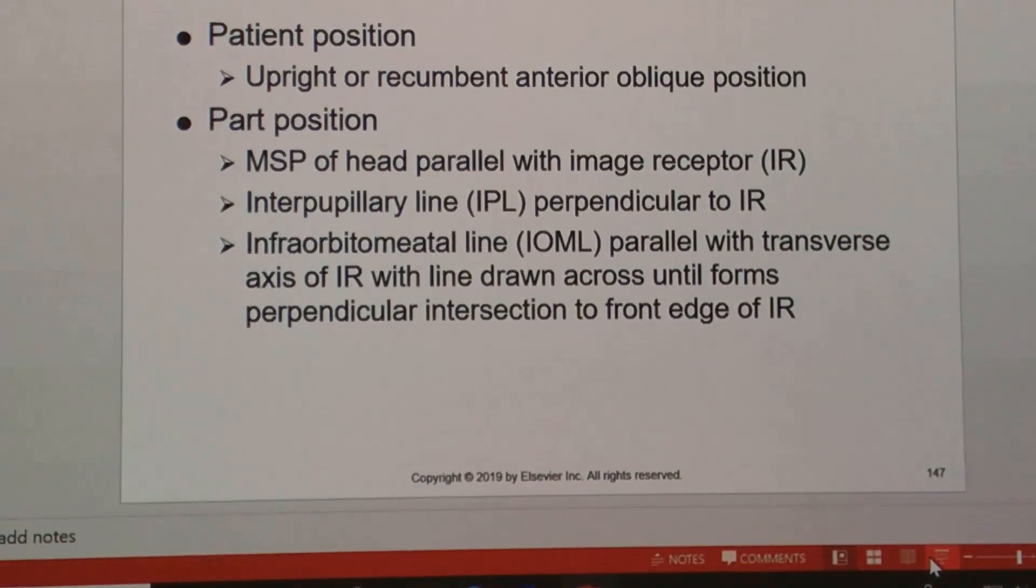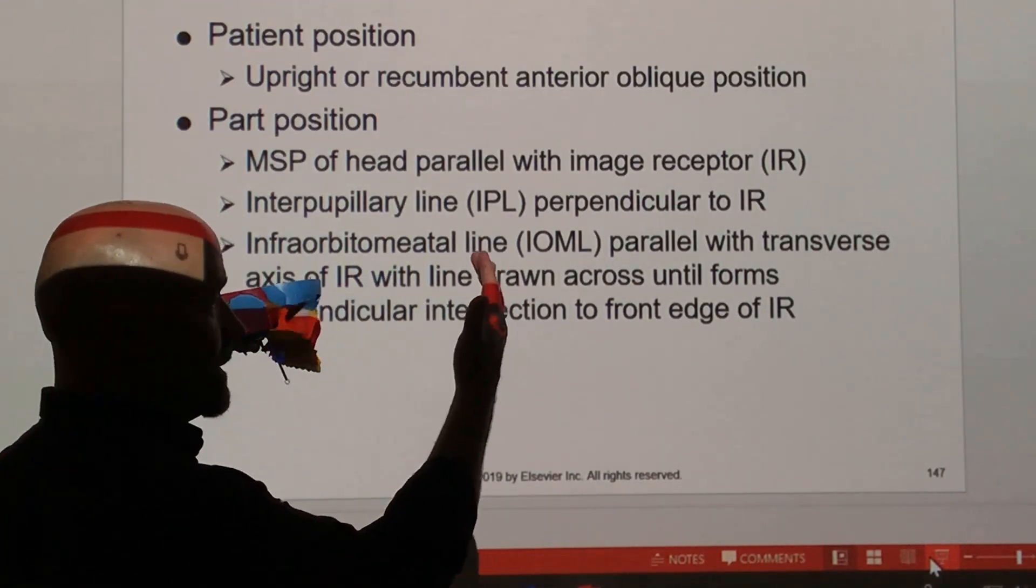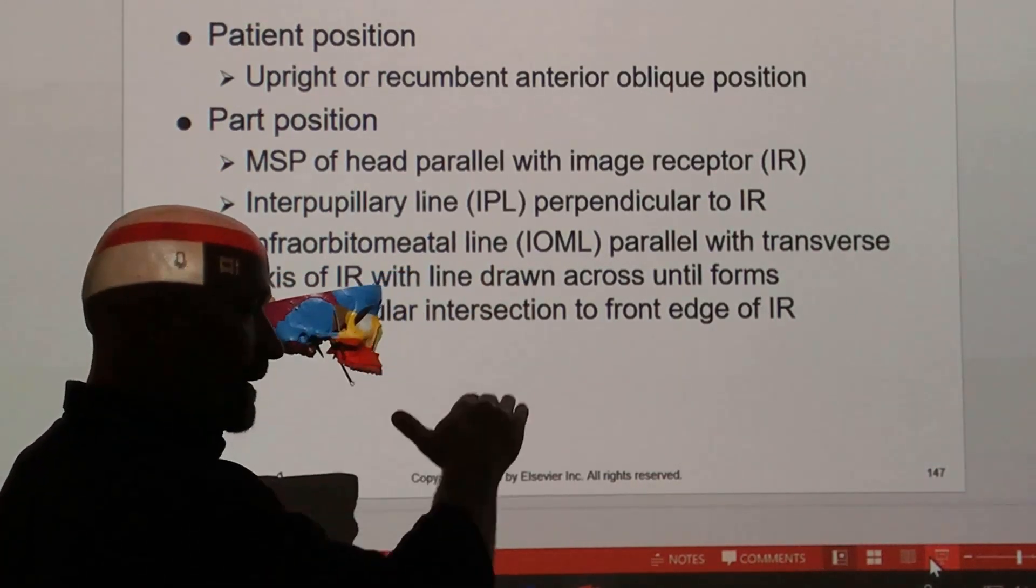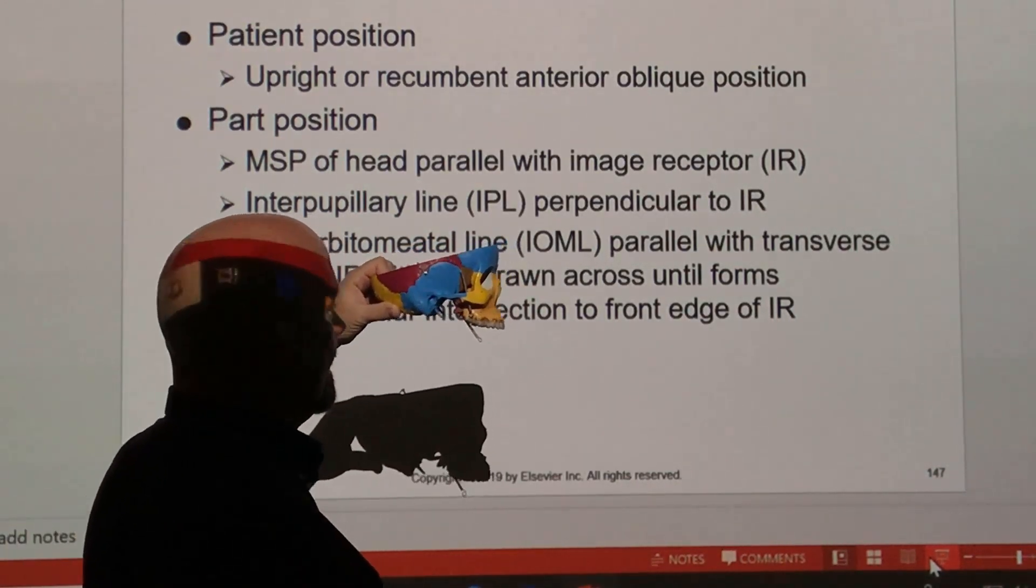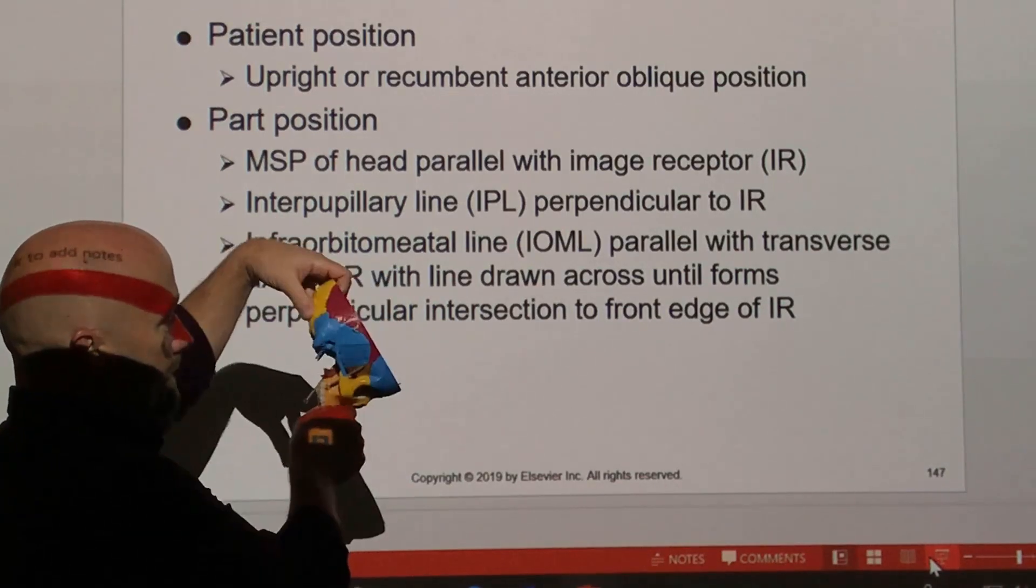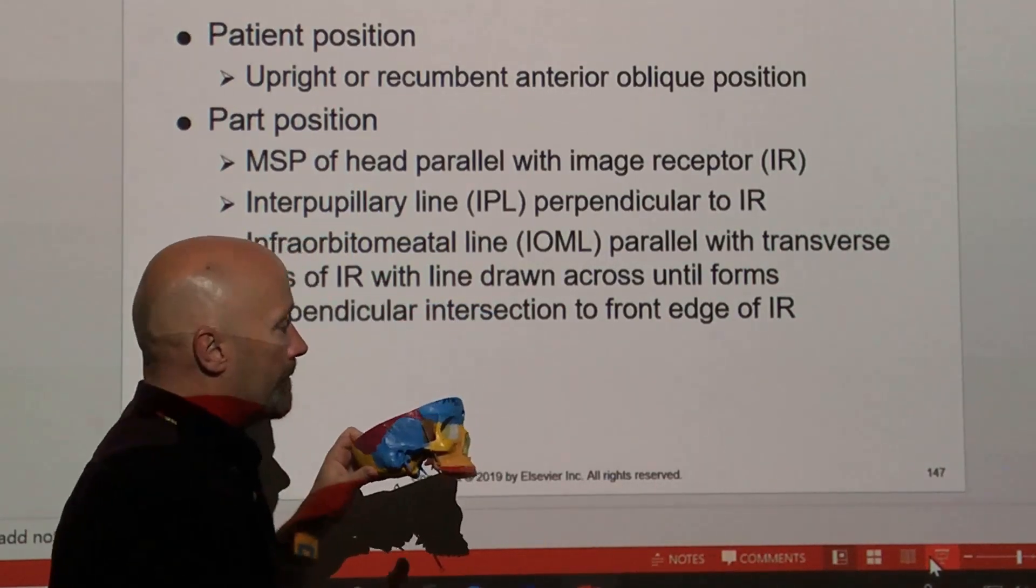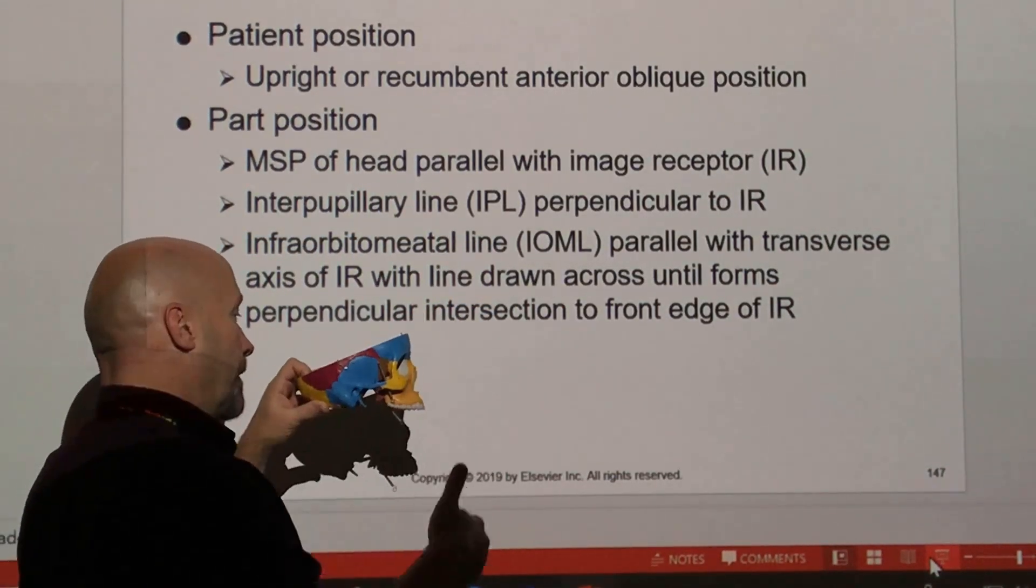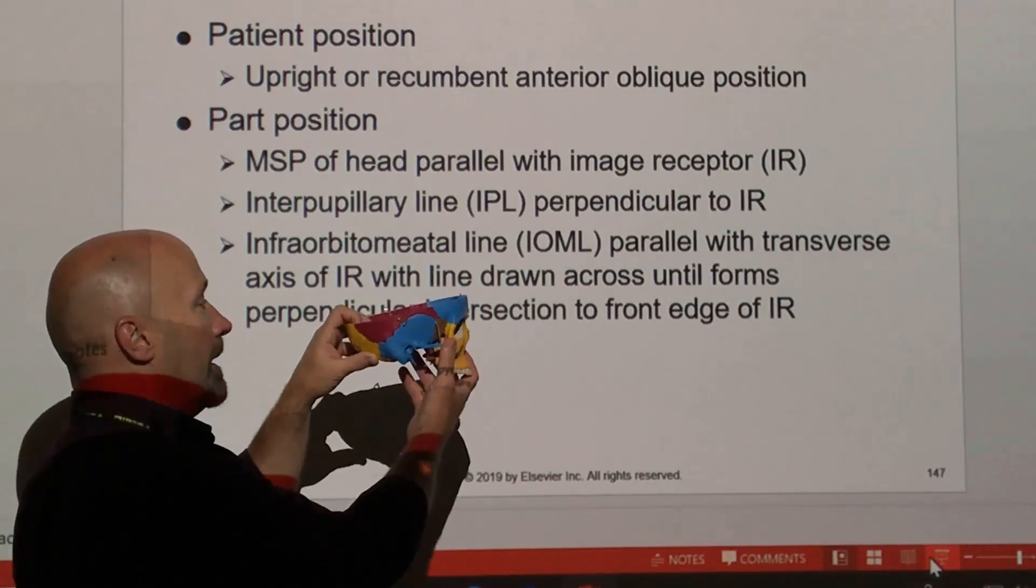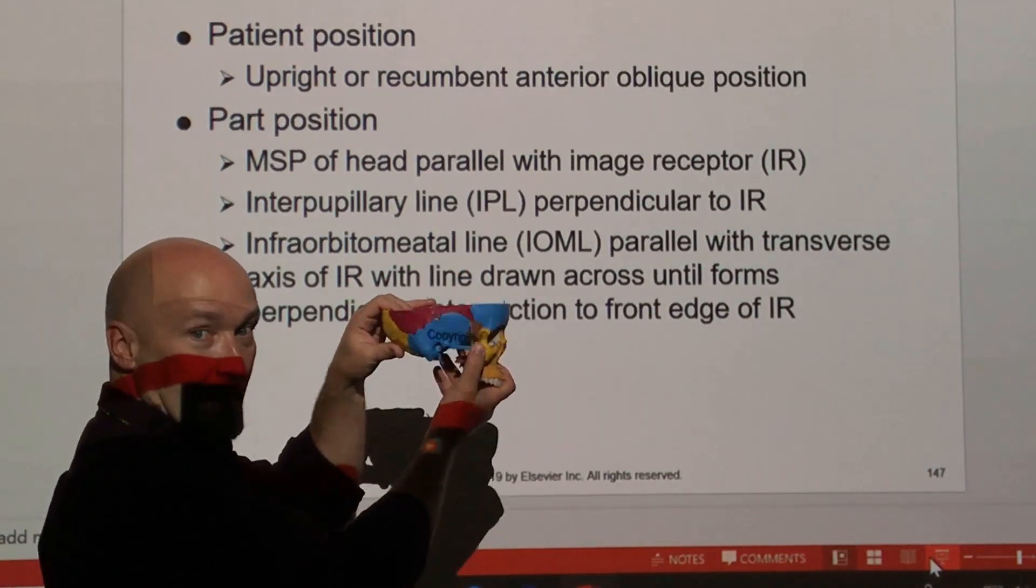Lateral facial bones, we're going to position just like how we positioned before for the facial bones, and that was to extend the chin enough to put the infraorbital meatal line perpendicular to the front of the image receptor, parallel with the long axis of the image receptor. And again, that's just for uniformity so the radiologist doesn't have to look at one set of facial bones looking like this, the next set looking like that. It's just uniformity. The most important things though are to get the interpupillary line perpendicular to the image receptor. That's going to determine whether or not you've got rotation and it's also going to determine whether or not you get head tilt.